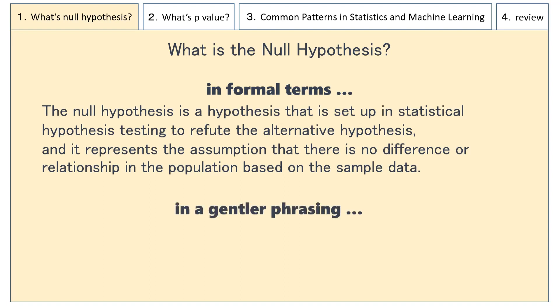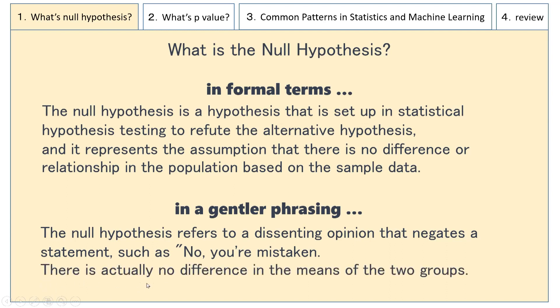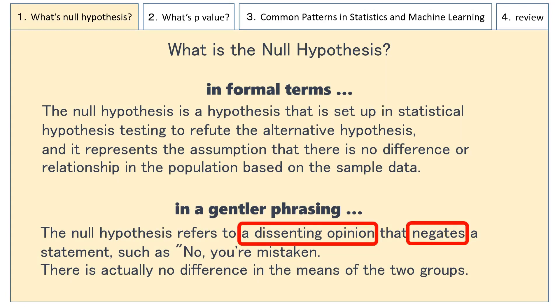However, in a gentler phrasing, the null hypothesis refers to a dissenting opinion that negates a statement — such as, "No, you're mistaken. There is actually no difference in the means of the two groups." We will provide a more detailed explanation in chapter 3, so for now a rough understanding is sufficient. Just remember that the null hypothesis is an opposing opinion that denies what someone is claiming.